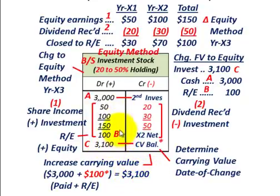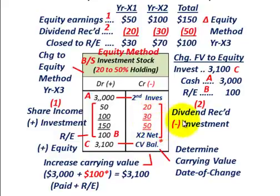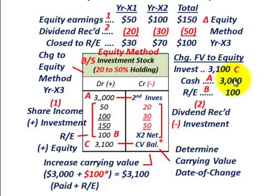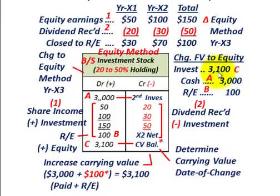This T-account shows how to account for your share of income when converting from the fair value method — for those years using fair value — less the dividends received, to determine what your balance is when you convert to the equity method. When we make our journal entries for this change from fair value to the equity method: we credit cash for $3 million, credit retained earnings for $100,000, and debit the investment account for the $3,100,000 carrying value.